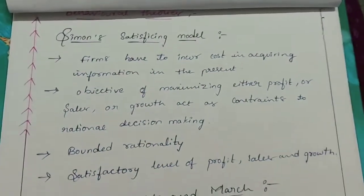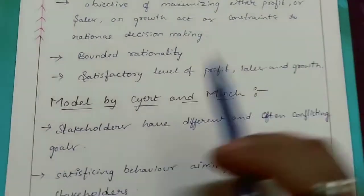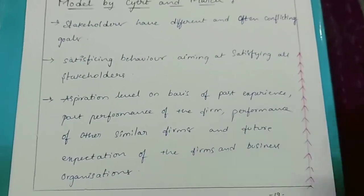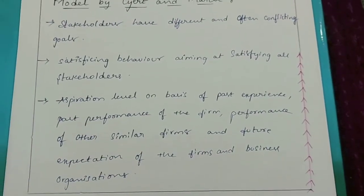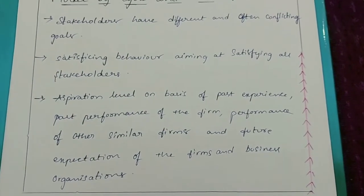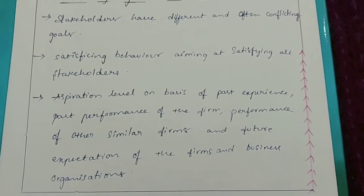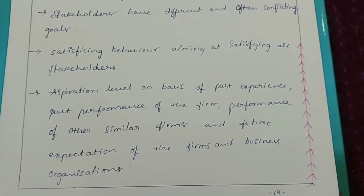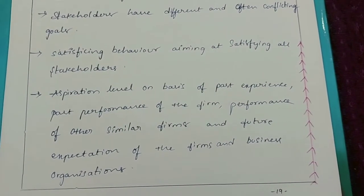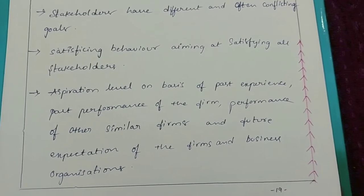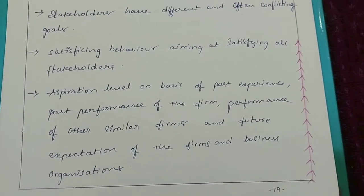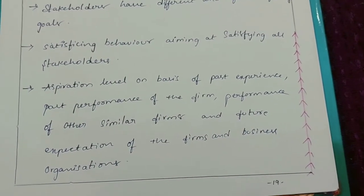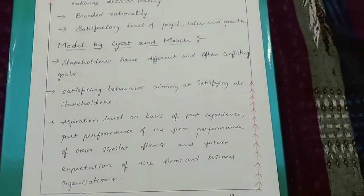Number 2: Model by Cyert and March. The elements of this model are: stakeholders have different and often conflicting goals; satisfying behavior aiming at satisfying all stakeholders; aspiration level on the basis of past experience, past performance of the firm, performance of other similar firms, and future expectations of the firms and business organizations.